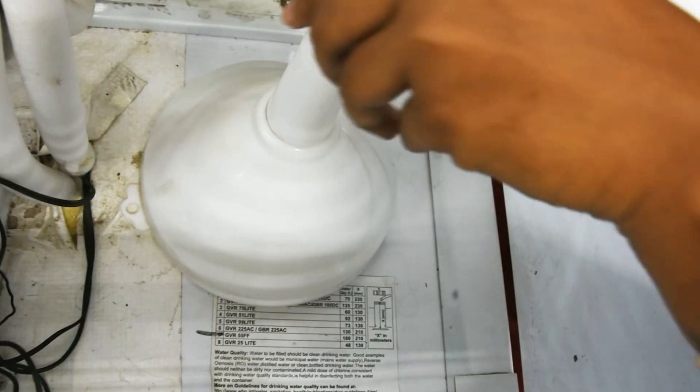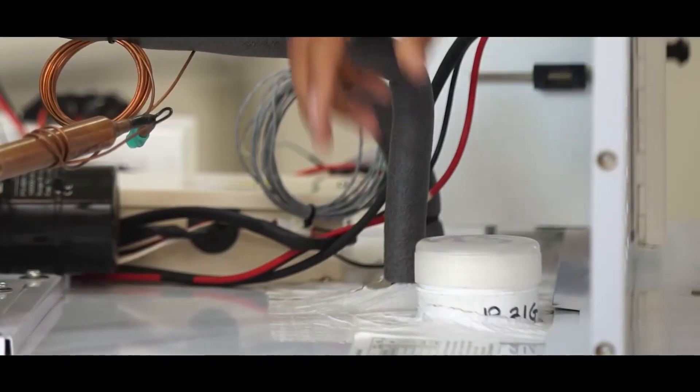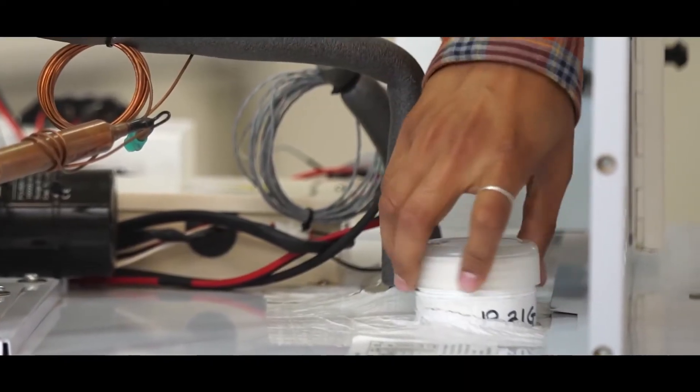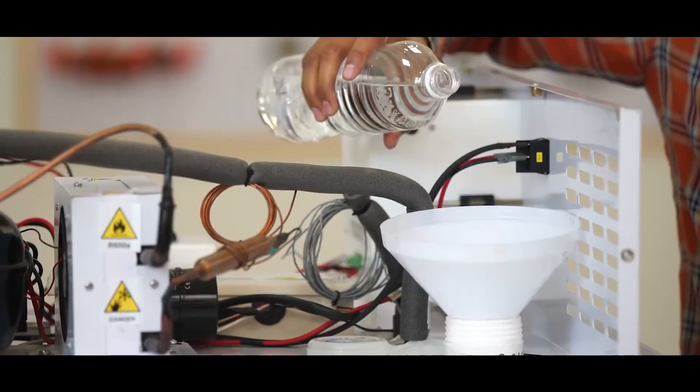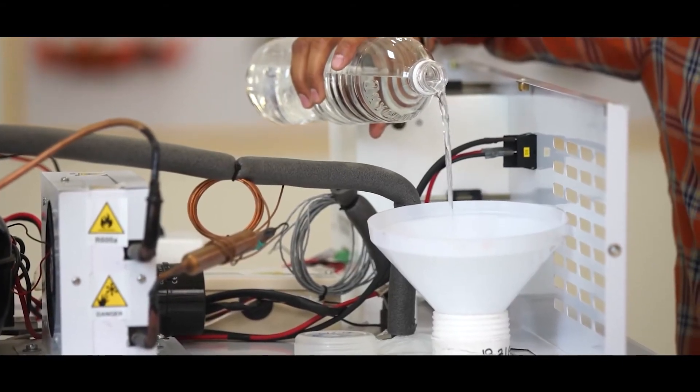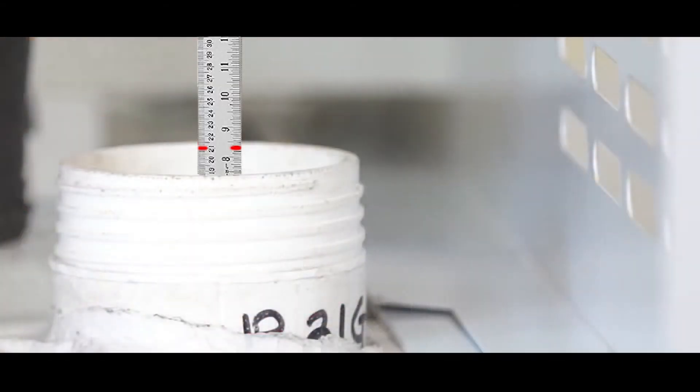Open the metal flap and you will get one funnel along with the machine. To fill the water, we need to remove this water tank cap. Take the funnel and pour the water. Make sure water quantity should be 180 liters.